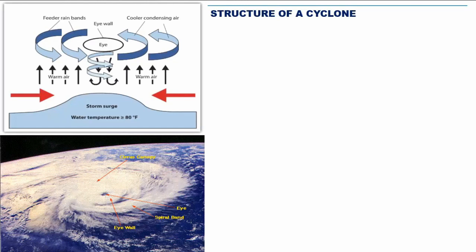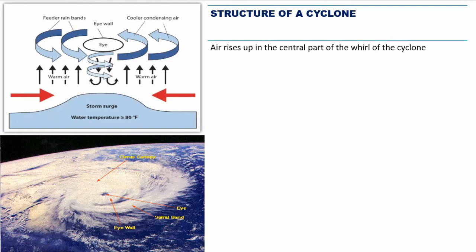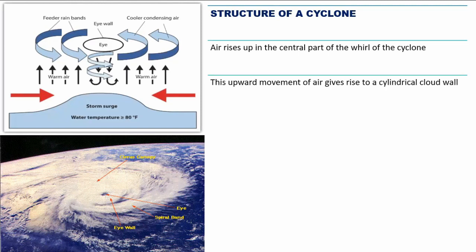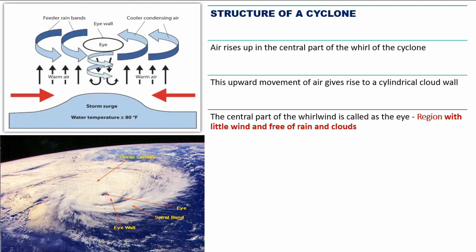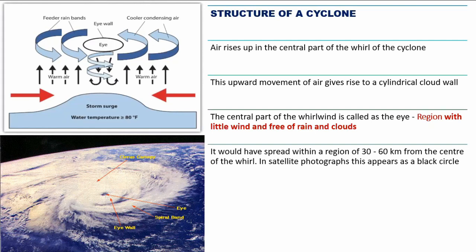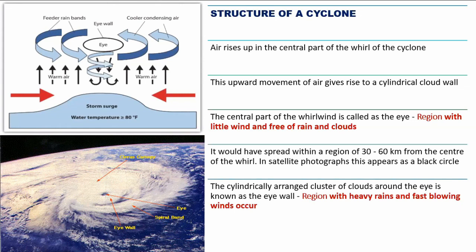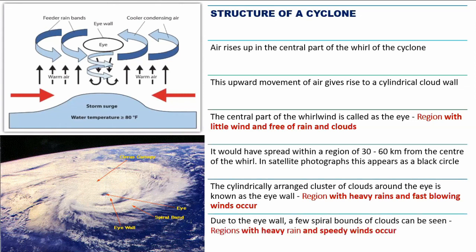In addition to the circulation of air particles, air rises up in the central part of the whirl of the cyclone. This upward movement of air gives rise to a cylindrical cloud wall. The central part of the whirlwind is called the eye — a region with little wind and free of rain and clouds, spreading 30 to 60 kilometers from the center, appearing as a black circle in satellite photographs. The cylindrically arranged clusters of clouds around the eye is known as the eye wall, a region with heavy rains and fast blowing wind. Due to the eye wall, a few spiral bands of clouds can also be seen, also with heavy rains and speedy wind conditions.